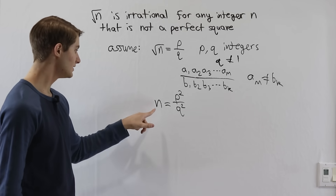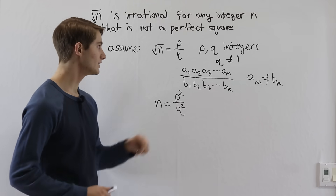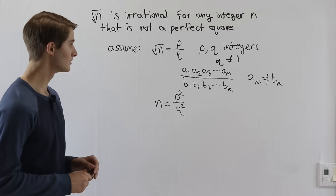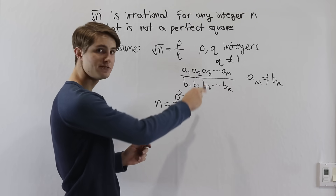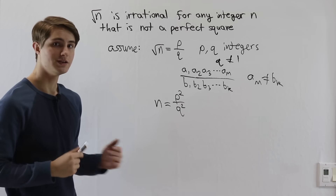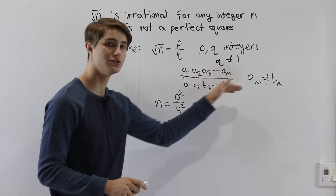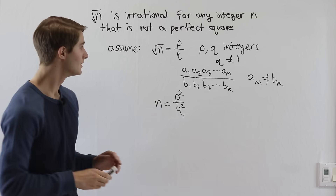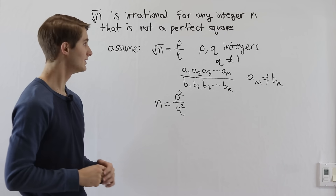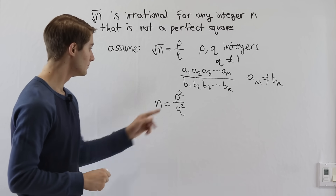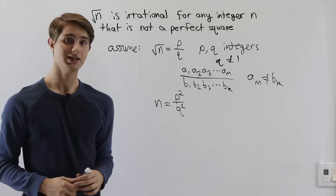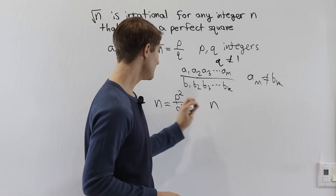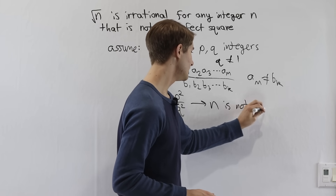Now going down to our equation, n equals p squared over q squared, and q is not equal to 1. What that means is that n is a ratio of two integers. But remember, none of the prime factors in p are equal to any of the prime factors in q. We might have a bunch of 2s and 3s on the top, and a bunch of 5s and 7s on the bottom, but none of them are going to cancel out. So if p over q is a fraction and it's not an integer because q isn't 1, then p squared over q squared is also not an integer, which means that n is equal to something that's not an integer. Therefore, n is not an integer.